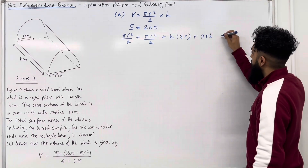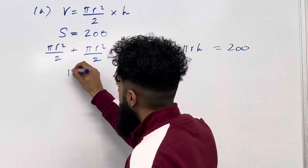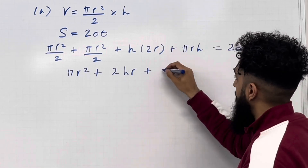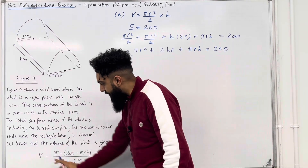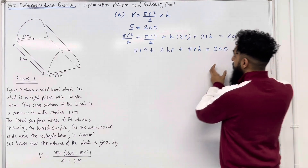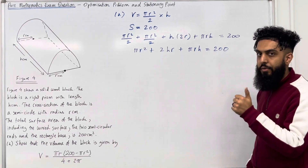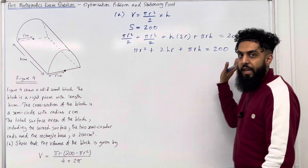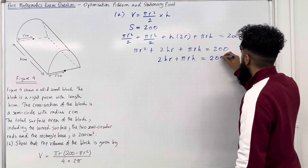So this must equal 200. Simplifying: pi r squared over 2 plus pi r squared over 2 is just pi r squared, plus 2hr plus pi r h equals 200. Notice that in the V formula there is no h. So we need to make h the subject in this surface area formula and then substitute that h into the volume formula in order to derive the volume in terms of r. Taking pi r squared to the right-hand side: 2hr plus pi r h equals 200 minus pi r squared.